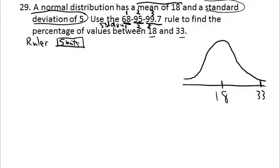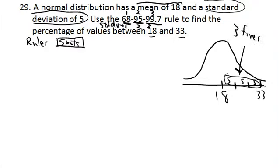If you add 5 to 18, you get 23. If you add another 5 to 23, you get 28. And if you add another 5 to 28, you get 33. So counting by 5s, there are 3 of them — there are 3 standard deviations between 18 and 33.